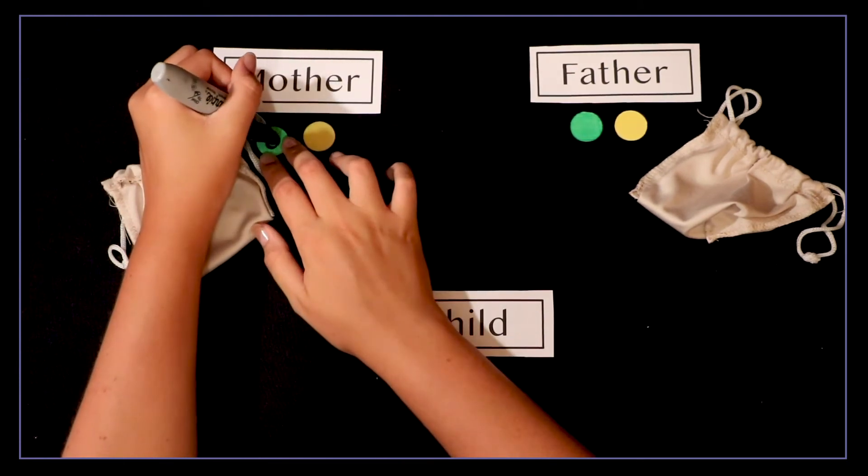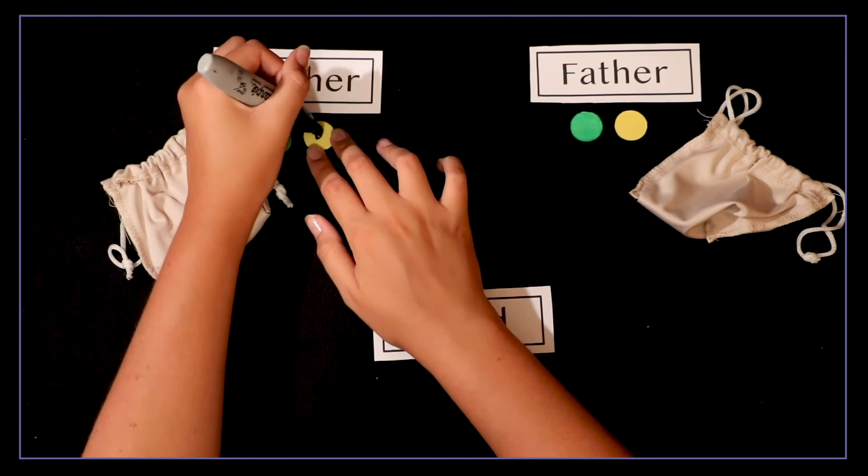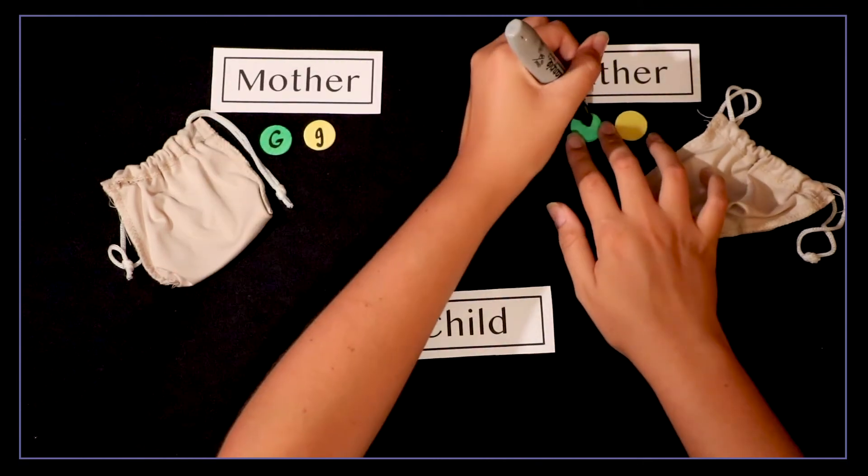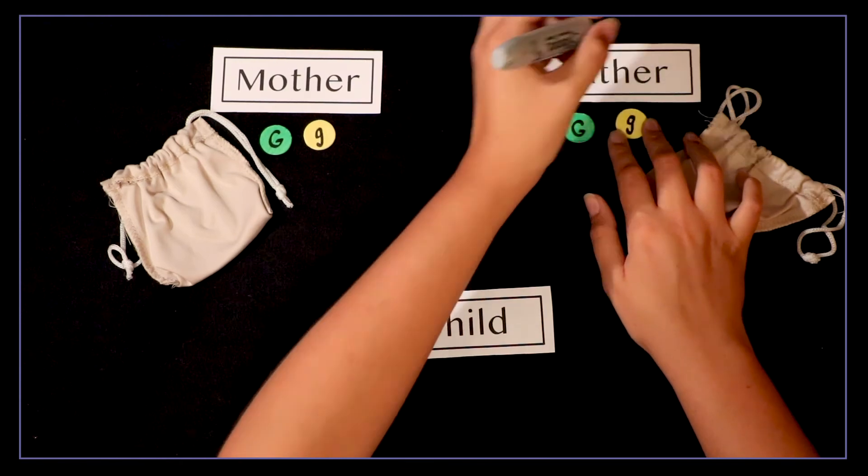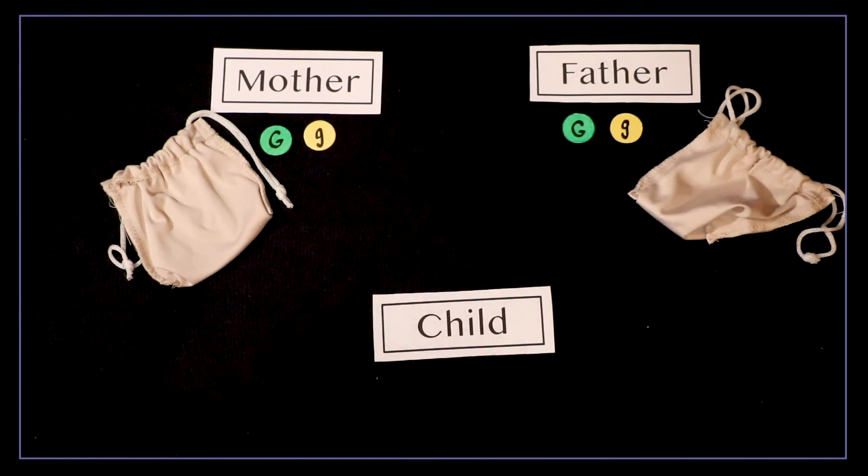Also since we're connecting this to classic instruction we need to add capital and lowercase letters to our alleles. Dominant alleles always use uppercase letters and recessive alleles use lowercase.